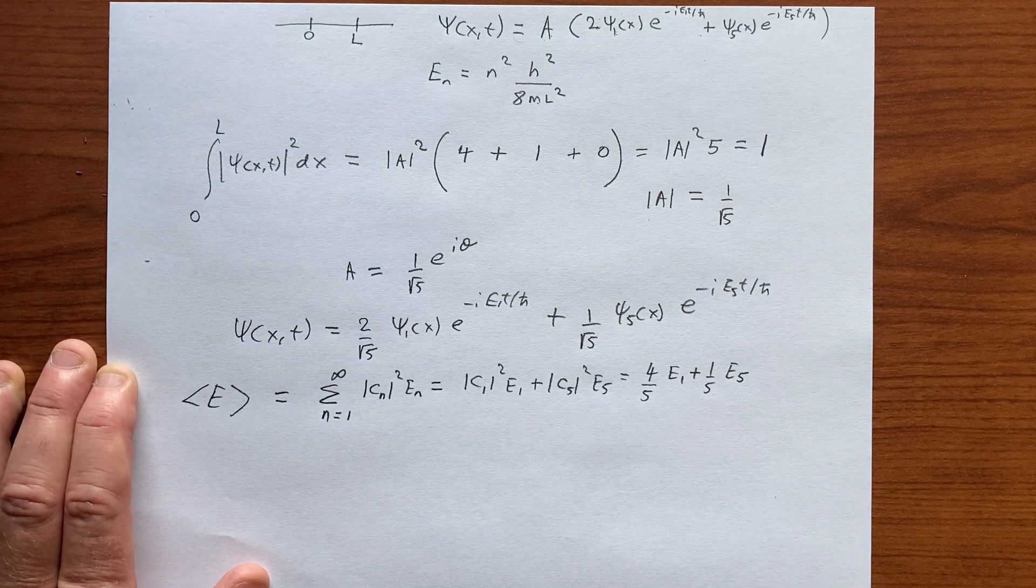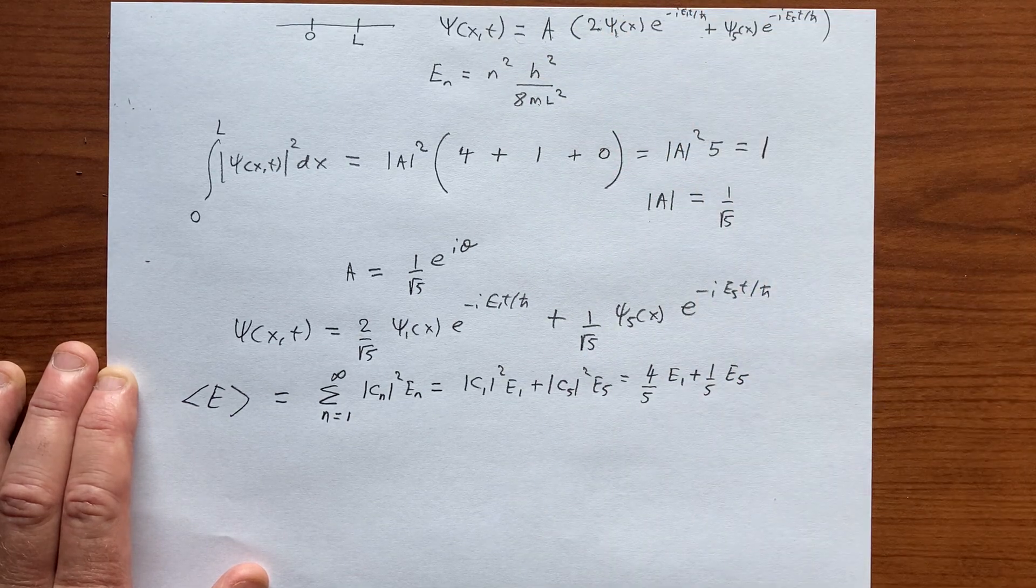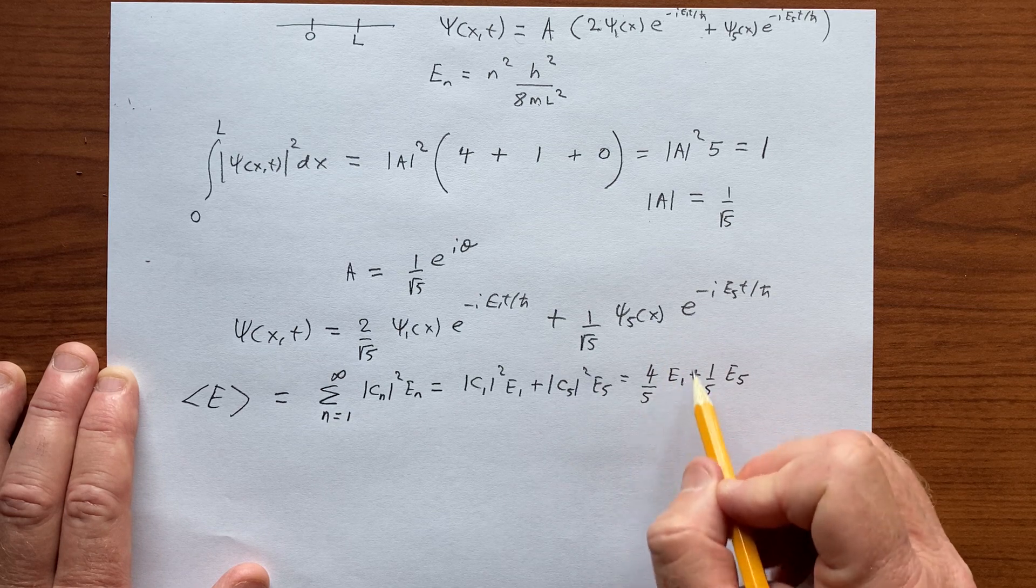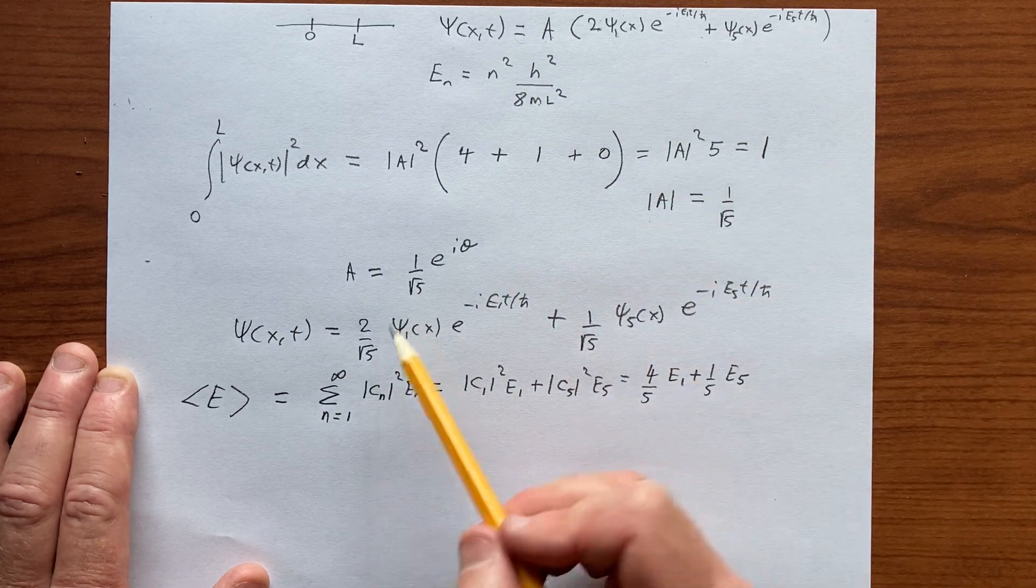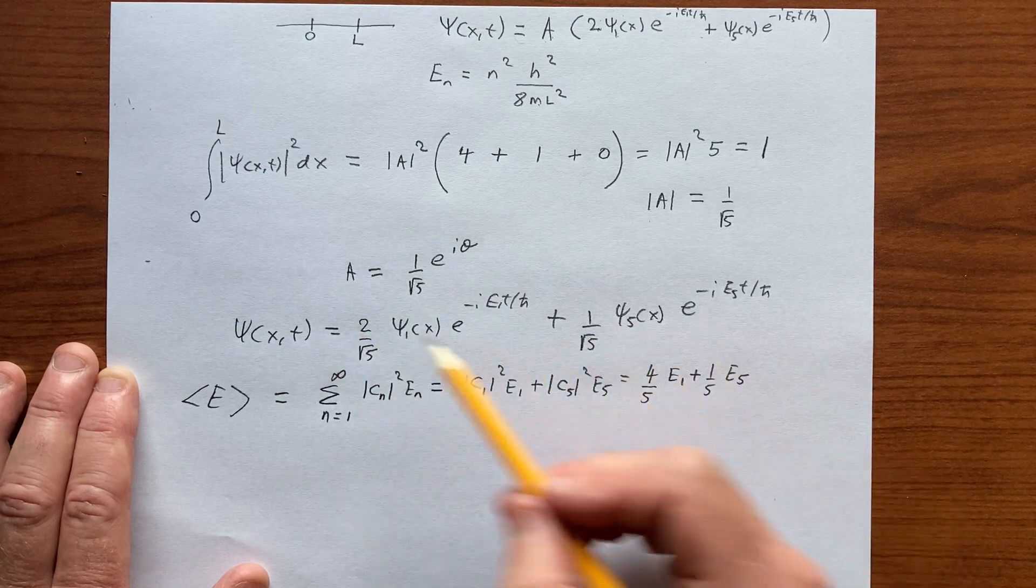And that's the average. We can put these values in, E1 and E5, and get an actual number. But E1 is weighted more than E5, as we can see from the fact that it has twice the weight, right?